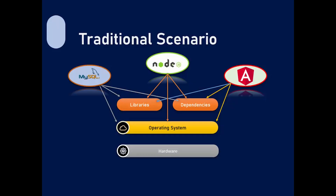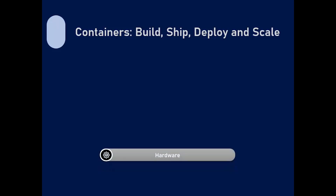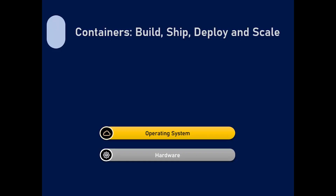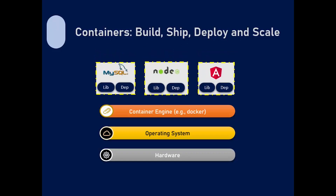This is where containers come into play. Containers will help you to build, ship, deploy, and scale out applications that have otherwise become very difficult in the traditional scenario. In containers, we have the same hardware and operating system, and on top of the OS we have a container engine — for example, Docker or Podman. These container engines help to isolate the applications using the OS. For every application, we maintain a different image, and along with the application we group whatever libraries are required and whatever dependencies need to be resolved, making a container image which is complete in itself.